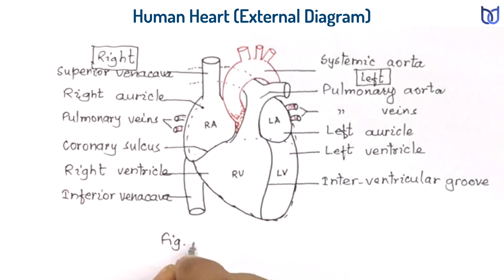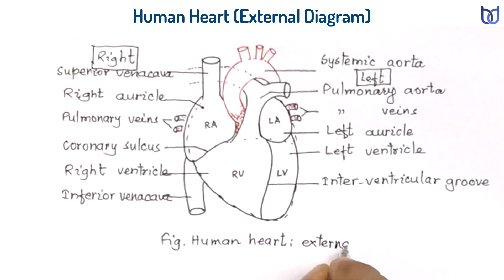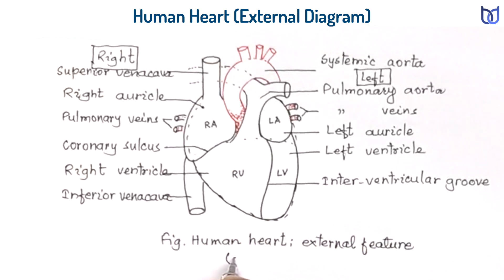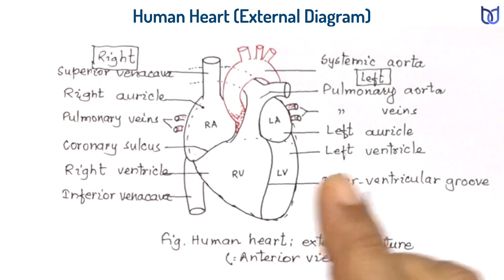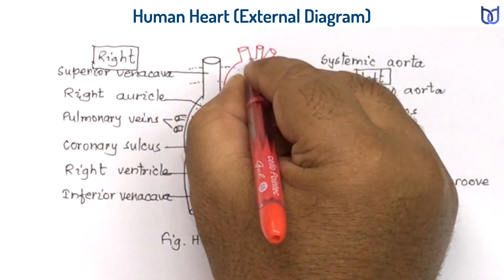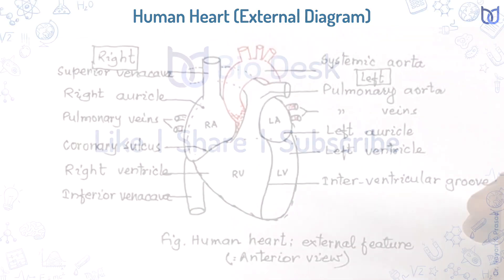The name of the diagram should be written below — here we can write 'Figure: Human Heart — External Features.' Remember, this is the front view, called the anterior view. Try to draw the diagram of the human heart yourself, practice more and more, and then you can draw it in an exam easily.